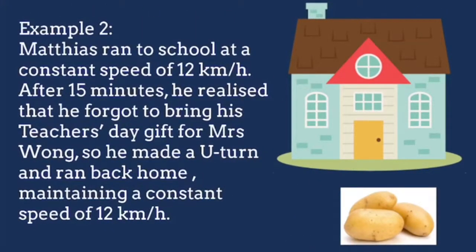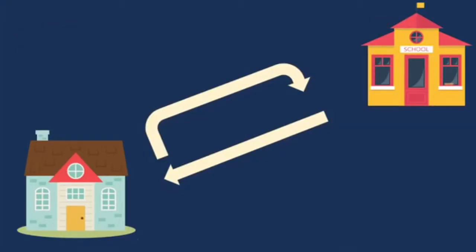Here is another example. Matthias ran to school at a constant speed of 12 kilometers per hour. After 15 minutes, he realized he forgot to bring his teacher's day gift for Mrs. Wong, so he made a U-turn and ran back home, maintaining a constant speed of 12 kilometers per hour. Assigning his journey there as positive and the journey back as negative, his speed on the way back will be 12 kilometers per hour, but his velocity will now be negative 12 kilometers per hour.